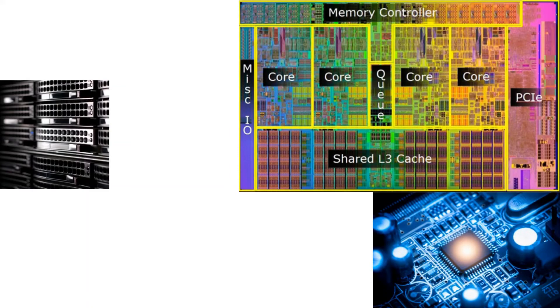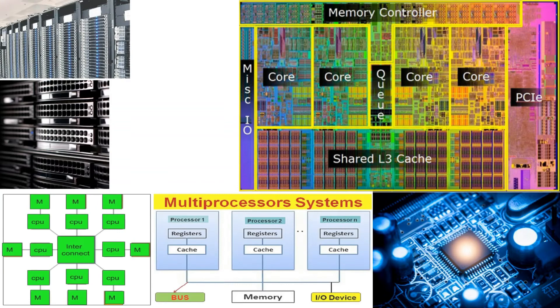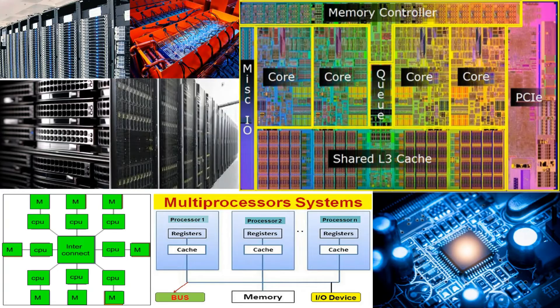Multi-processor computers have two or more CPUs. They have CPUs that share different parts of the computer like memory, disk, and bus. Each processor is capable of running different programs simultaneously, which enables true multitasking.